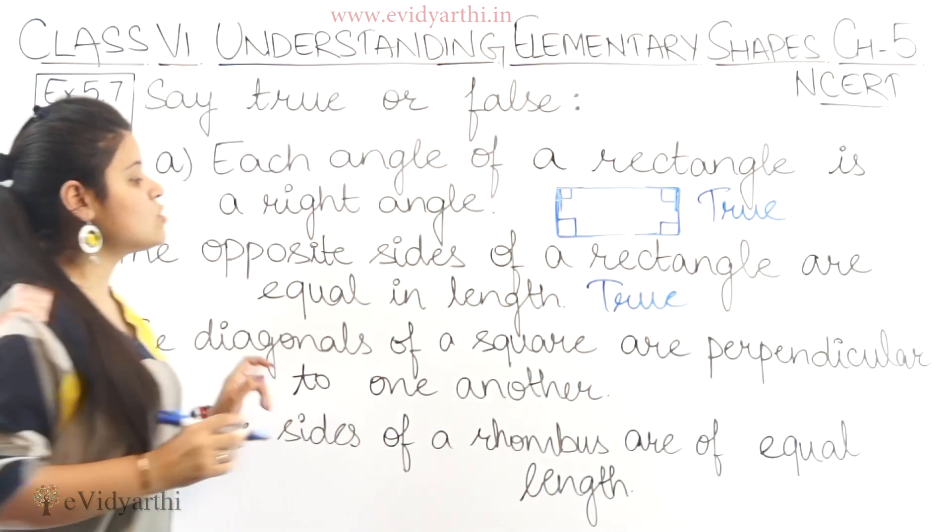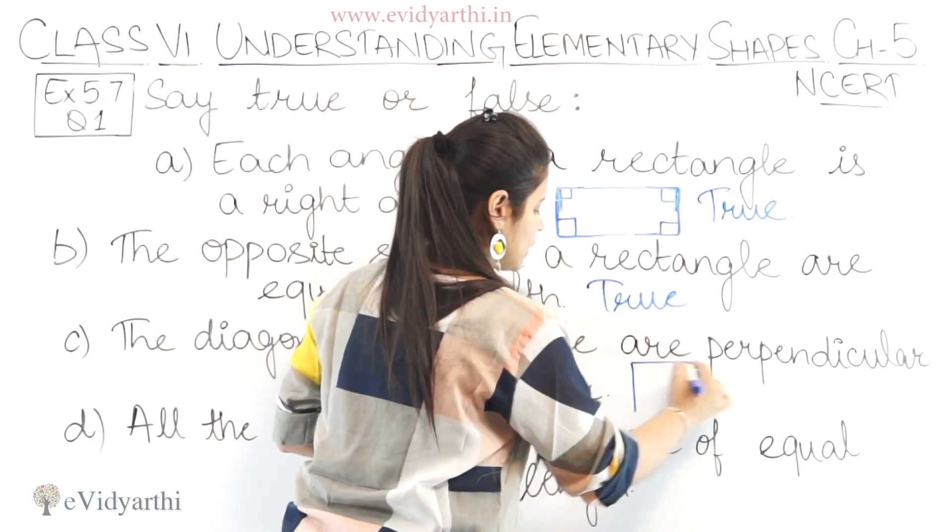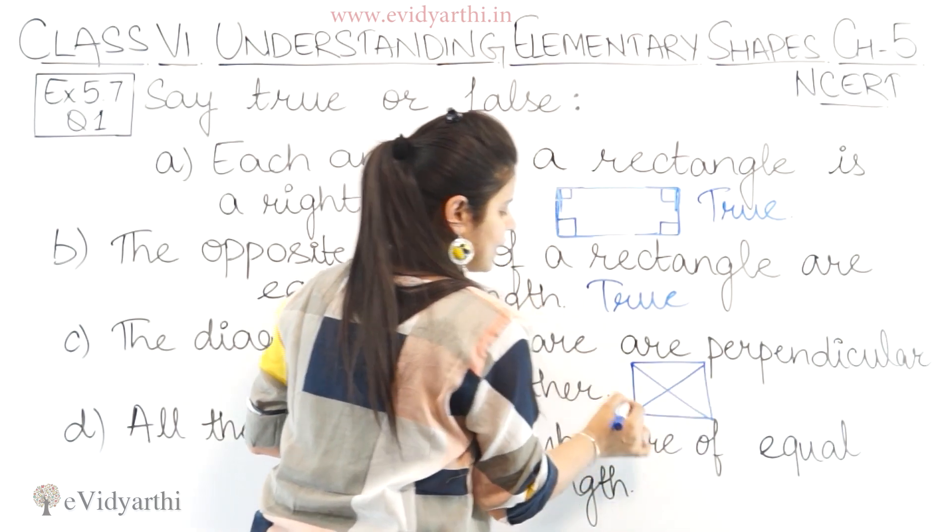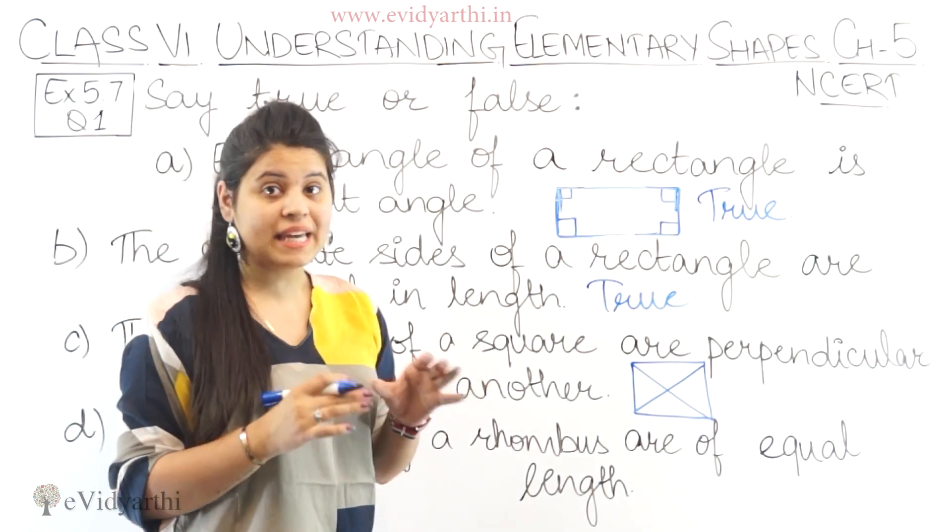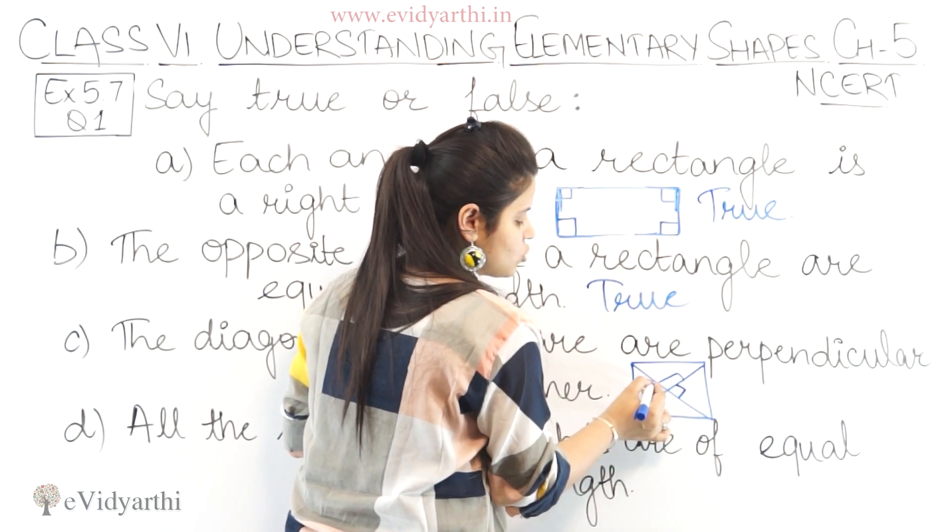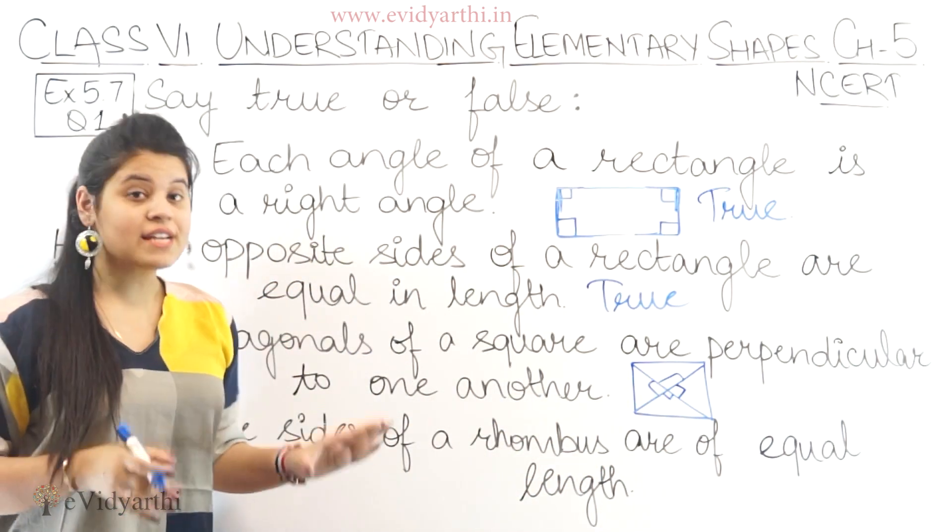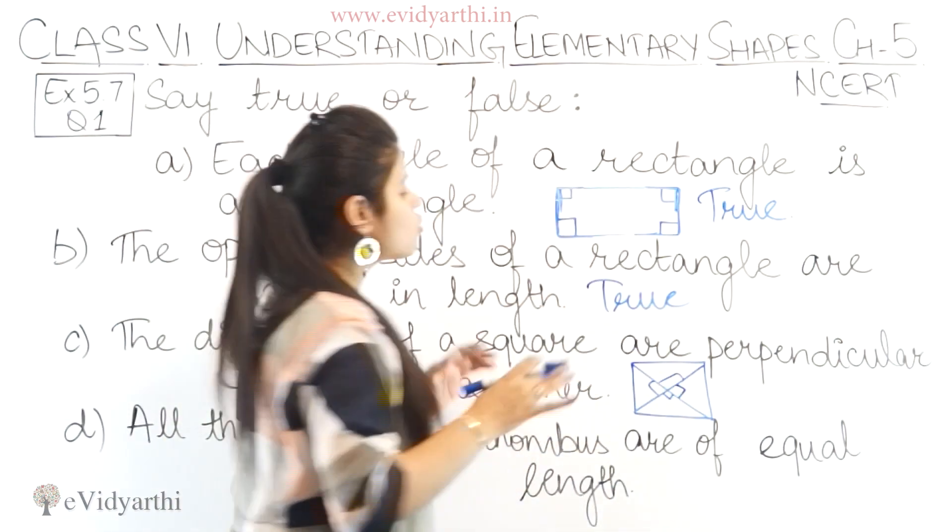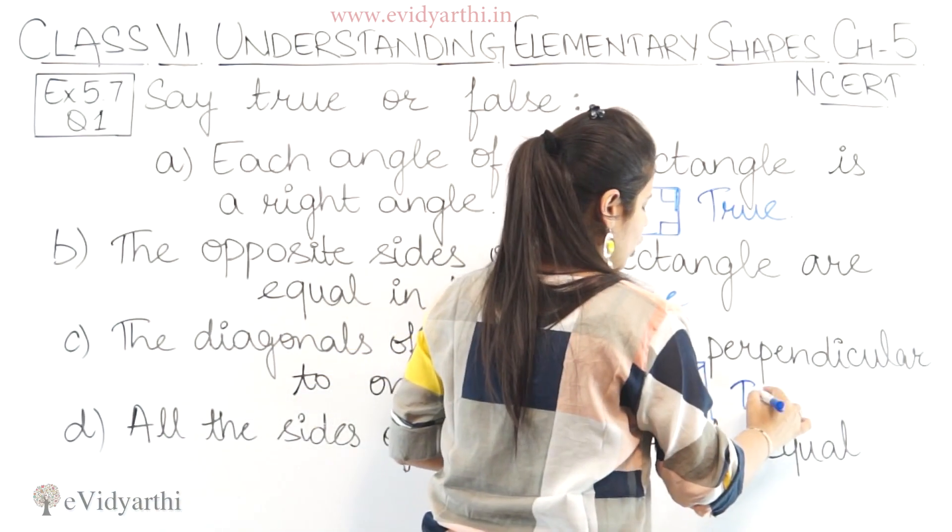Next, the diagonals of a square are perpendicular to each other. Aap diagonals kya hota hai? If this is a square, so yeh uske diagonals. Right? Yeh jo diagonals hai yeh perpendicular hoge hai. Yeh jo diagonals hai yeh 90 degree triangle form kar rahe hai. Which is true. Yes, the diagonals of a square are perpendicular to each other. So this will also be true.